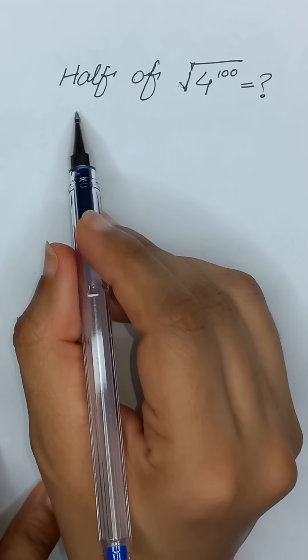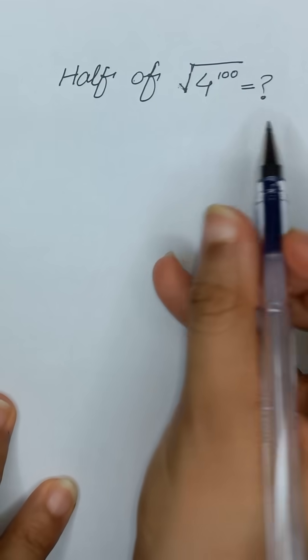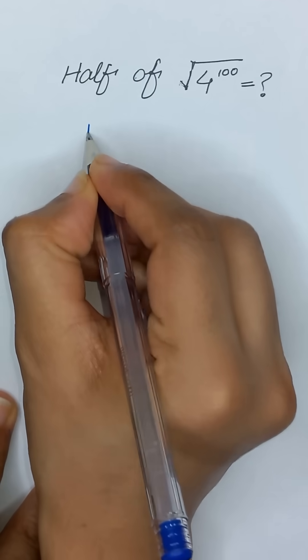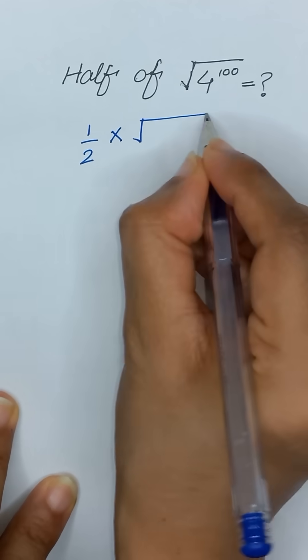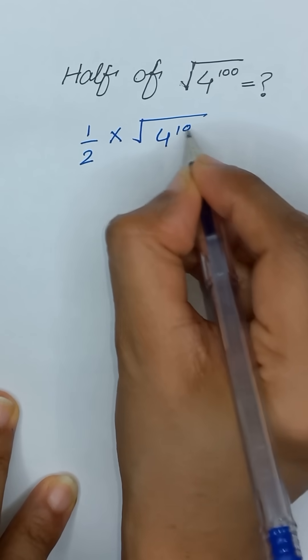What will be the value of half of square root of 4 to the power 100? Half means 1 divided by 2, of means multiply, and square root of 4 to the power 100.